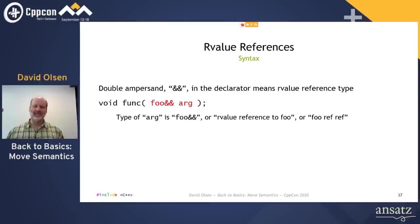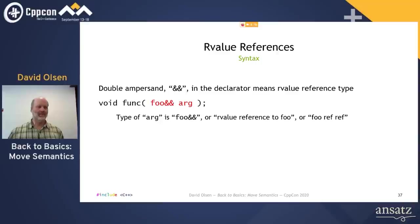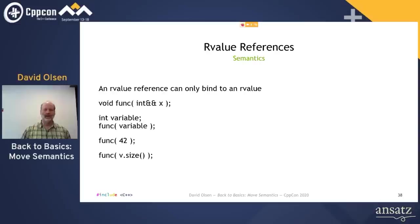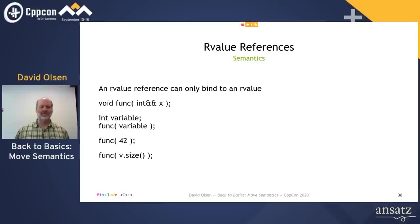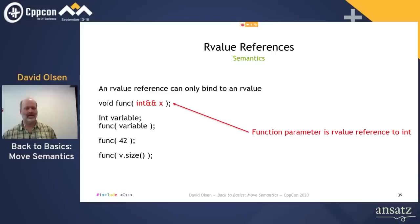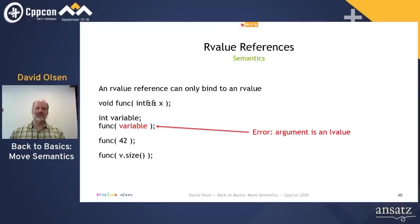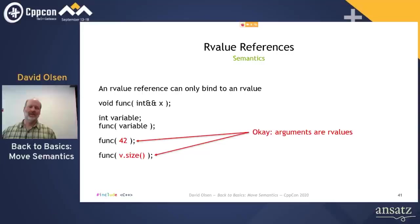Syntactically, an R-value reference is indicated by a double ampersand. An L-value reference uses one ampersand; an R-value reference uses two. In the function declaration shown here, func has a single parameter named arg whose type is R-value reference to foo, often pronounced 'foo ref ref'. The most important point is that R-value references can only bind to R-values. If you try to initialize an R-value reference with an L-value, you'll get a compiler error. In this example, func's parameter has type R-value reference to int. If we try to pass an L-value to func, such as an integer variable, the compiler will complain. But if we pass R-values to func, such as the int literal 42 or the return value from a function, everything works fine.